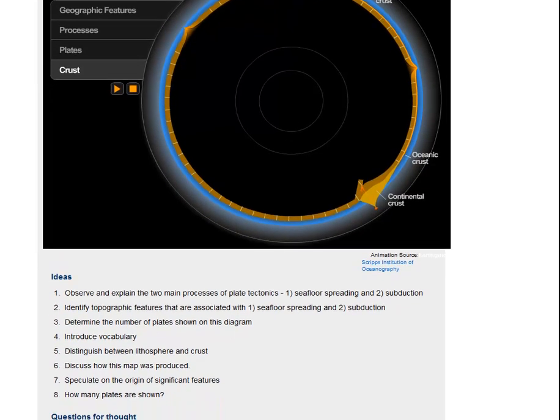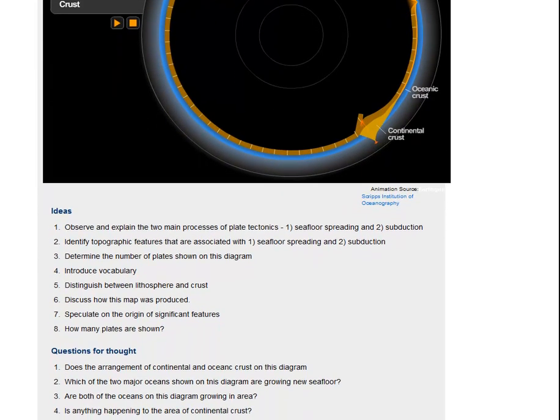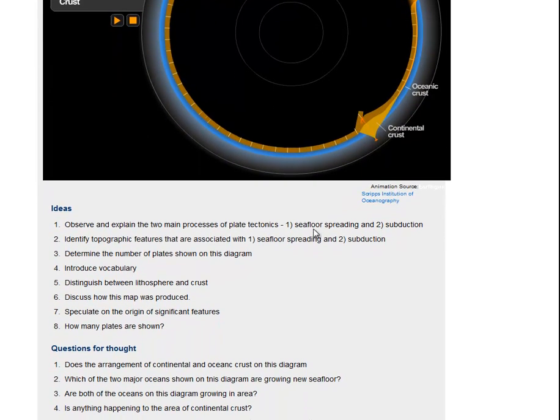There are questions that you can go through: observe and explain the two main processes of plate tectonics, seafloor spreading where the floor is actually spreading apart, diverging, or subduction where the seafloor is actually coming together or converging. Identify topographic features: mid-ocean ridges, deep ocean trenches, volcanoes, seafloors, all that kind of stuff. Determine the number of plates shown in the diagram. Introduce vocabulary that we discussed also, depending on geographic or the functional forces.